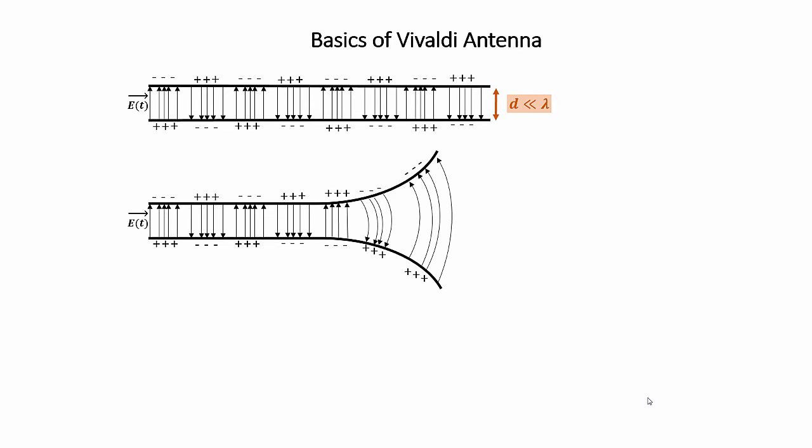When the separation between the conductors approaches to half wavelength, that is D is almost equal to lambda by 2, the electric field lines start to escape from the transmission line. And the radiation takes place.